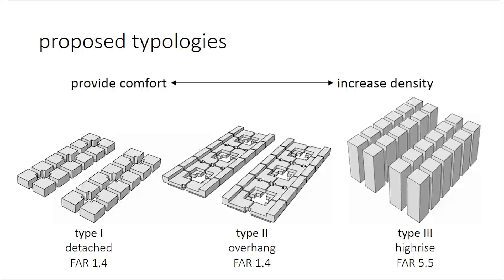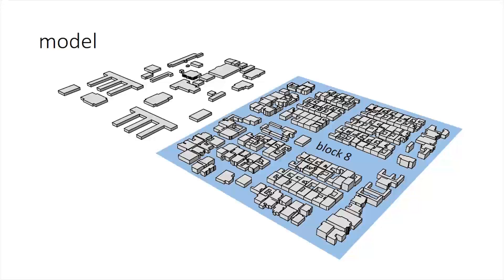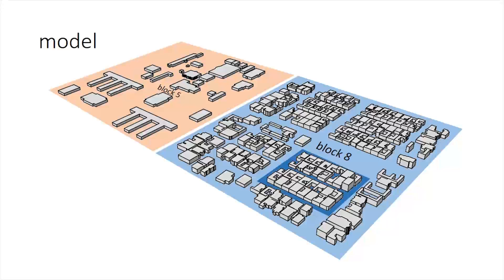We developed three building typologies which serve as possible design interventions for the neighborhood. The first two, which we term detached and overhang typologies, are three-story buildings that maintain the current density of 1.4 floor area ratio. The third, the high-rise typology, has a floor-area ratio four times greater and represents a method to increase density in the neighborhood. Our model consists of two blocks of the Alkansia neighborhood — Block 8 and the central service core, Block 5. For our walkability analysis, we consider this entire model. However, for most of the other analyses, we consider a small portion of Block 8 and repeat this to create an urban fabric for analysis.